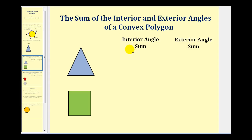So let's use that information to determine the sum of the interior and exterior angles of some convex polygons. For this first triangle, we know the sum of the interior angles — angle one, two, and three — would be 180 degrees.